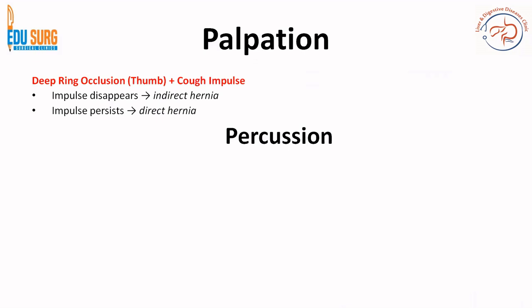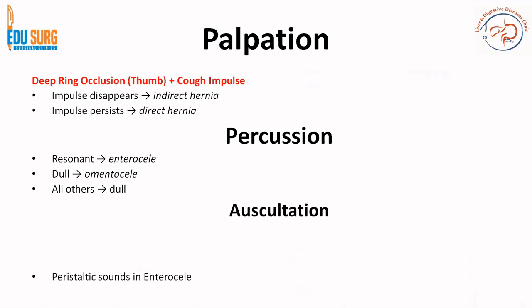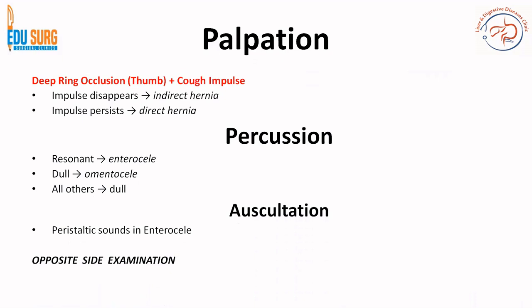So the three tests are: invagination test, deep ring occlusion test, and Zeman's three-finger test — all done in reducible uncomplicated hernias. Percussion is not very important, but it is resonant in enterocele and dull in omentocele; all other causes are usually dull. Auscultation is not routinely recommended, but if you auscultate, you will hear peristaltic sounds in enterocele.